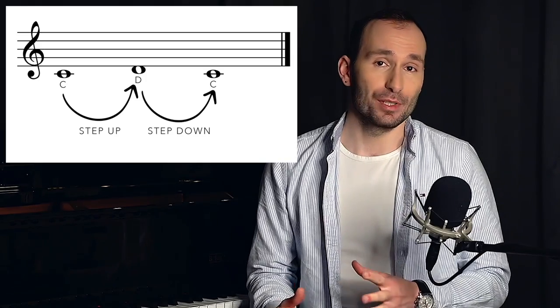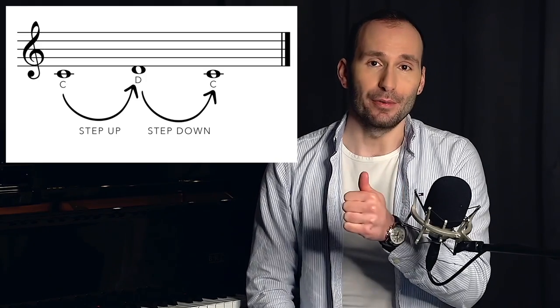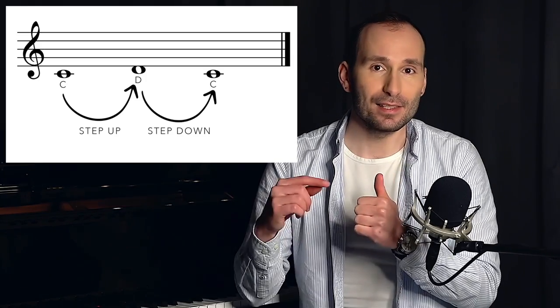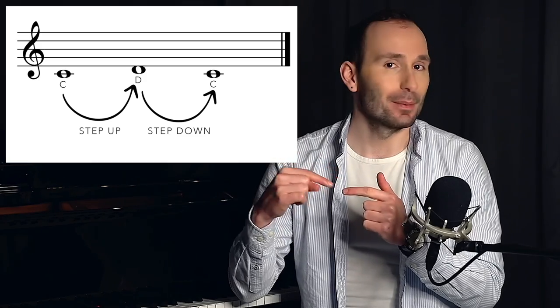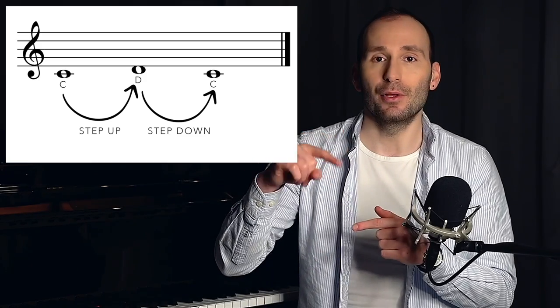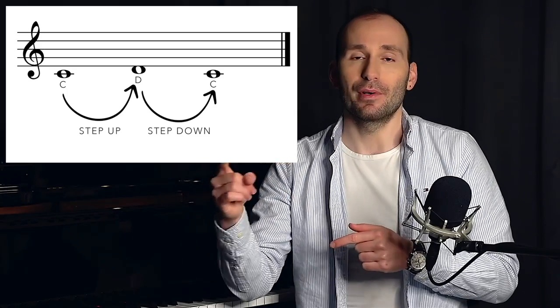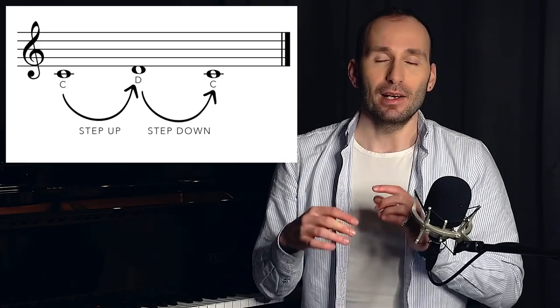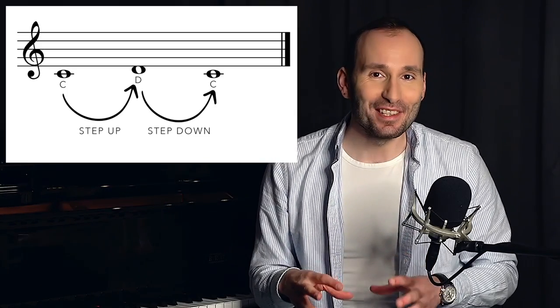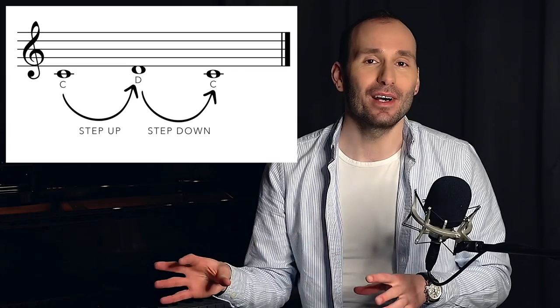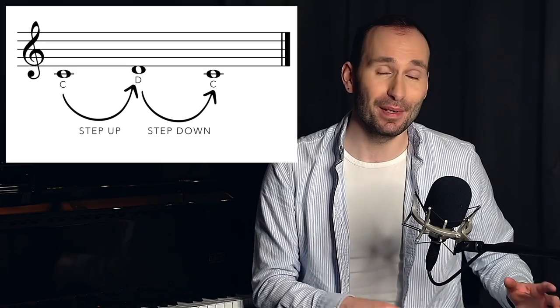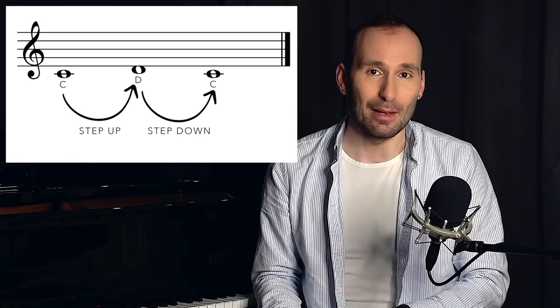Now why is this important? If you look at the staff, if one note is on the line and the next note is going to be in the space above or below that line, you can see that note is moving up a step or it's moving down a step. And if you understand that, then you don't actually need to know what all of these notes are that come after the first note, because you can just look at the direction and the steps. And you can play a very long sequence of notes without actually knowing what they are.